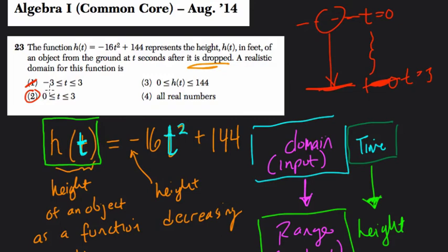0, 1, 2, 3, any increment in between, and then stop at 3 when it hits the ground. That seems reasonable. But let's look at the other two choices just in case.